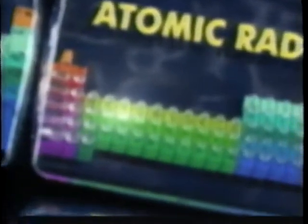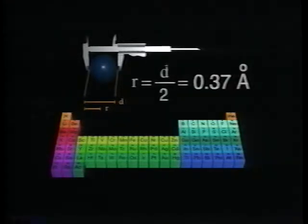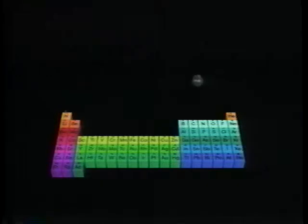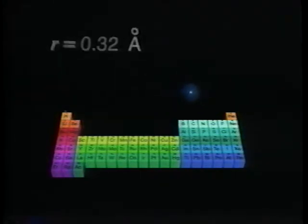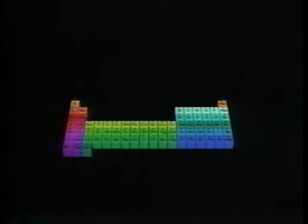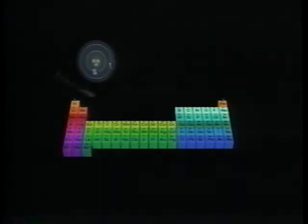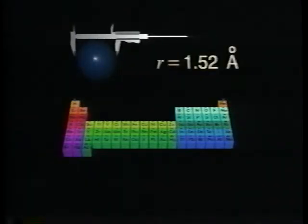Now let's explore the periodic trend in atomic radii. We can't directly measure the size of an atom, but we can estimate it from the space that the atom occupies in a molecule. Using this approach, the atomic radius of hydrogen, half of its diameter, is approximately 0.37 angstroms, or 0.37 times 10 to the minus 8 centimeters. The extra proton in helium holds the electrons more tightly, so helium is smaller than hydrogen. The atomic radius of helium is only 0.32 angstroms. Lithium has its outermost electron in the 2s orbital, and is therefore larger than hydrogen, with an atomic radius of 1.52 angstroms.